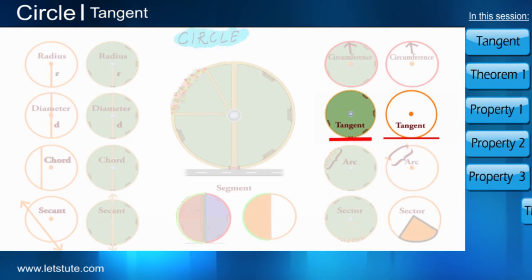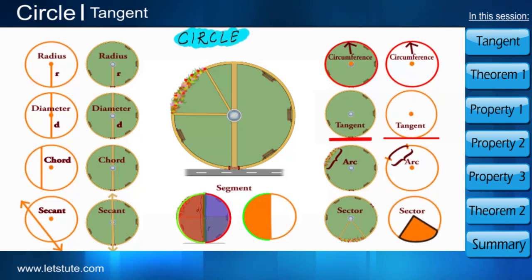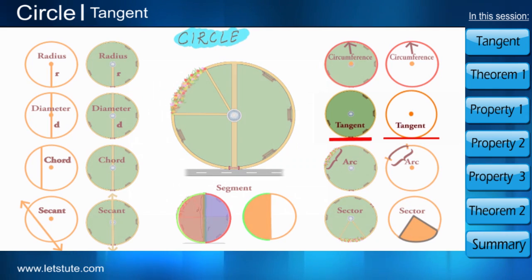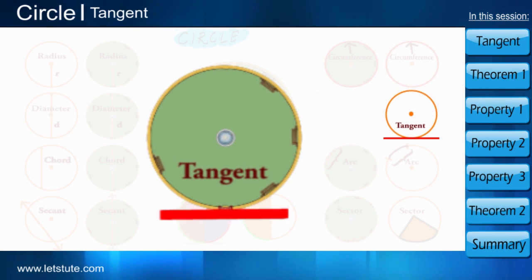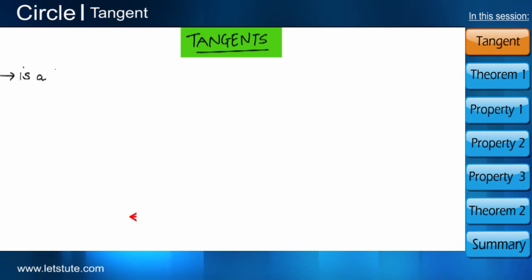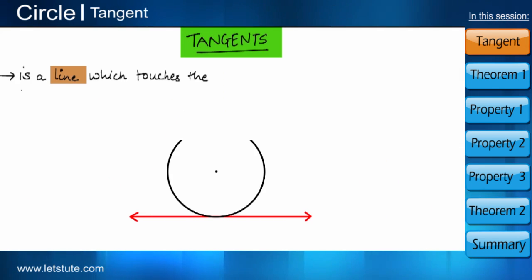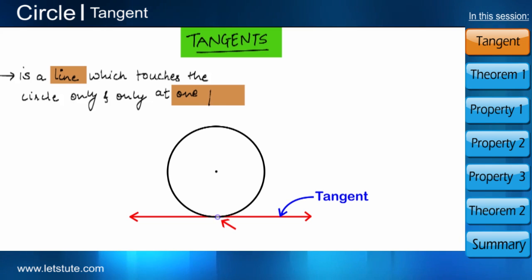Hello friends! In our previous session, we have learnt what are the various terminologies related to a circle. If you recall, what is a tangent? Can you remember the road attached to the park? Tangent to a circle is a line which touches the circle only and only at one point.